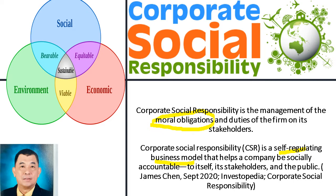Starbucks' goals for 2020 and beyond include hiring 10,000 refugees, reducing the environmental impact of its cups, and engaging its employees in environmental leadership. Today, there are many socially responsible companies whose brands are known for their CSR programs, such as Ben & Jerry's Ice Cream and Everlane, a clothing retailer. These are just typical examples of companies that are doing CSR.